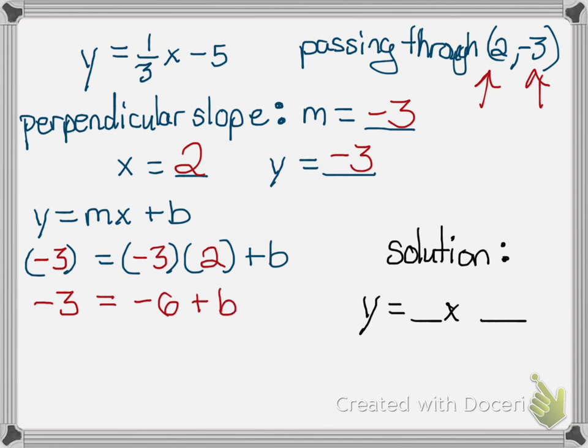To solve for b, I'm going to have to get rid of that negative 6. So the inverse operation of negative 6 is to add 6 to both sides. So I cancel that out, bring down my b,